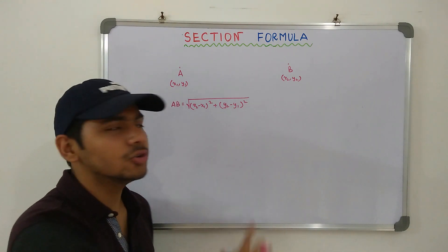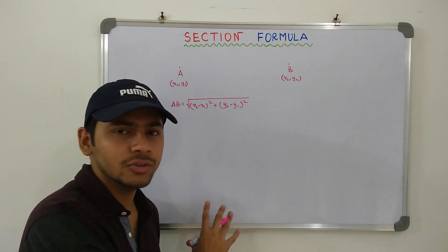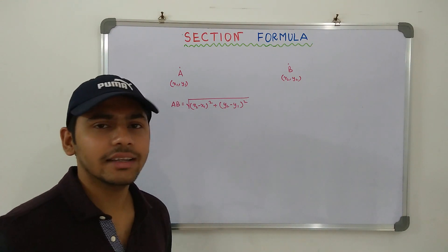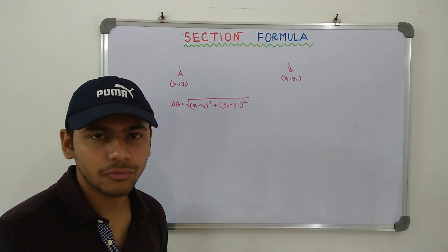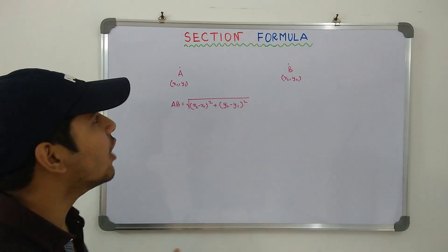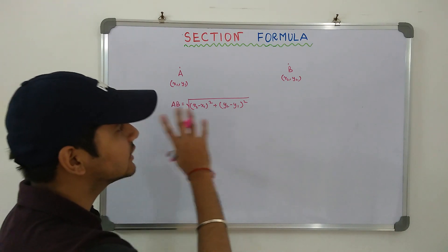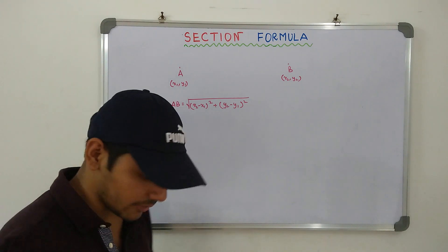It is pretty easy — you just put the values and you will get the distance. Now, we will move on to Section Formula.